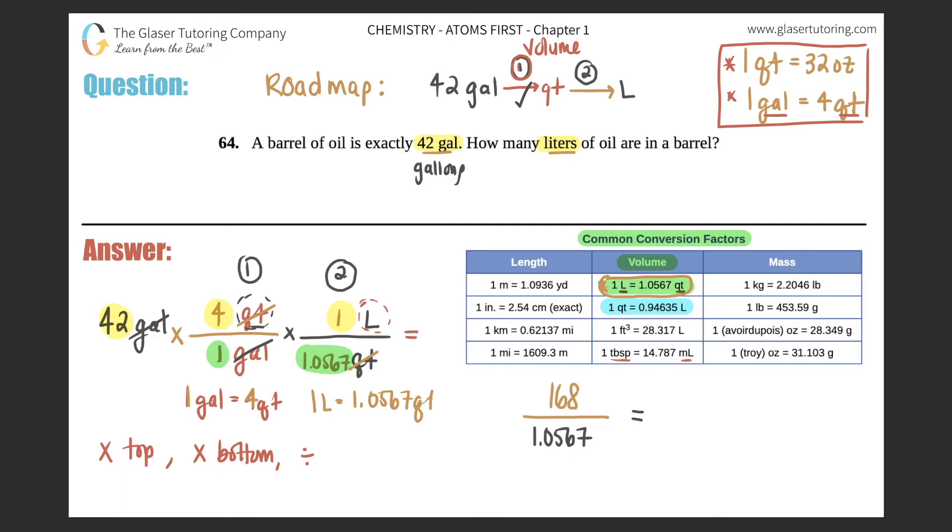Now I finally divide. So now I'm going to do 168 divided by 1.0567. 168 divided by 1.0567 is a big number, long decimal, so 158.9855.